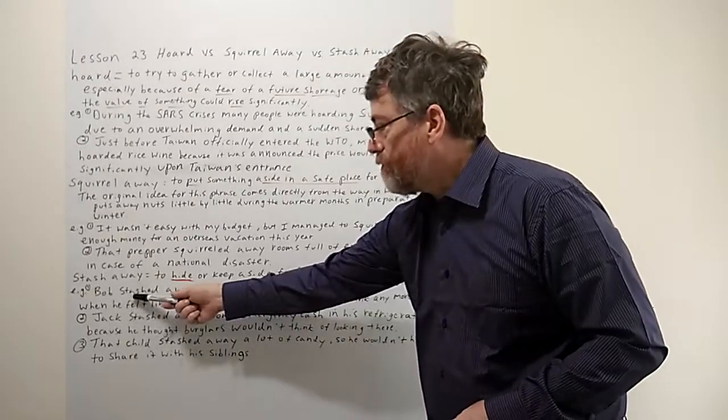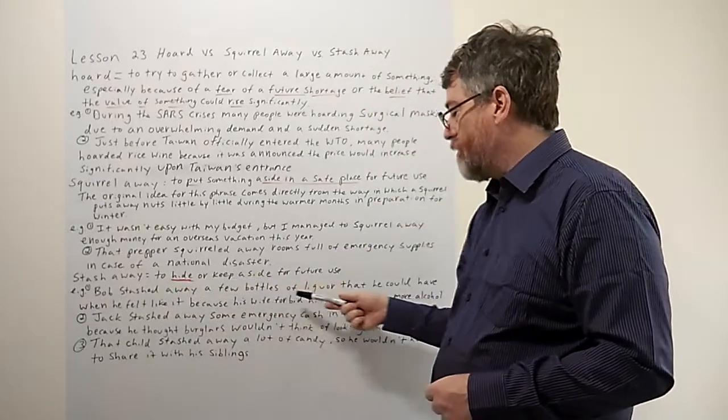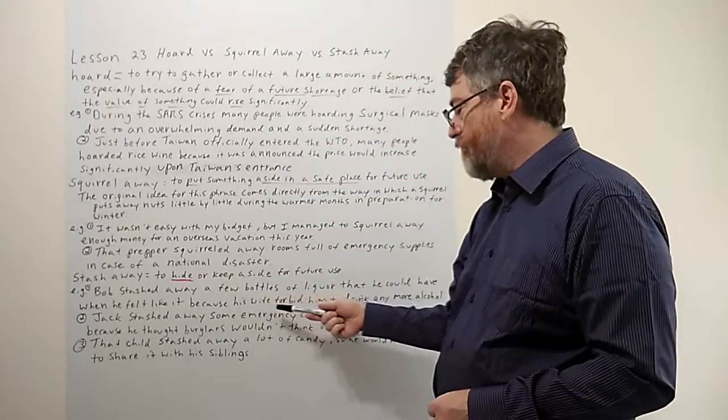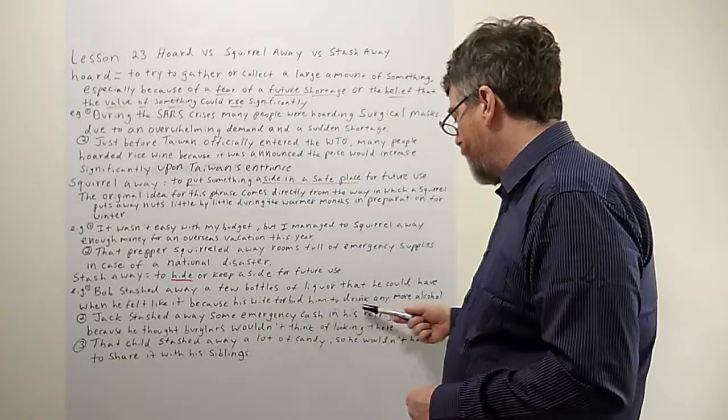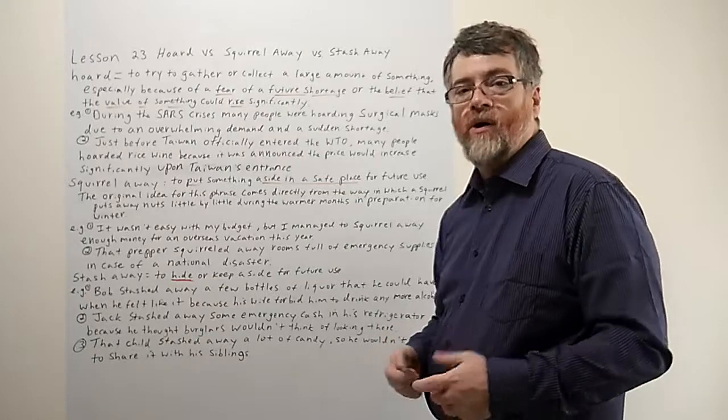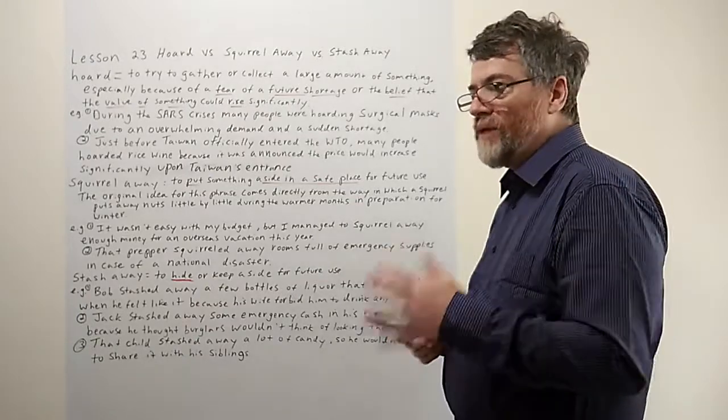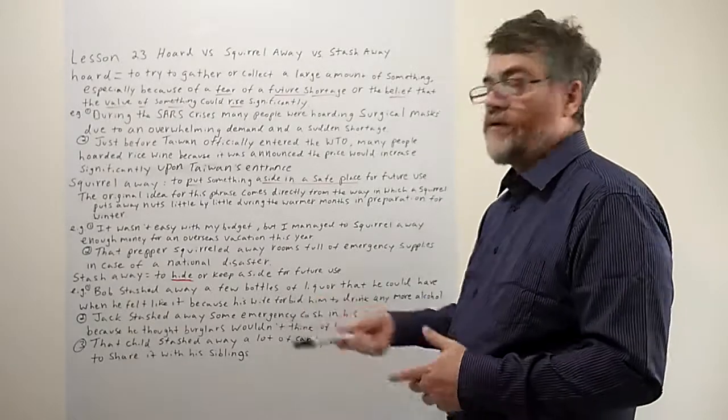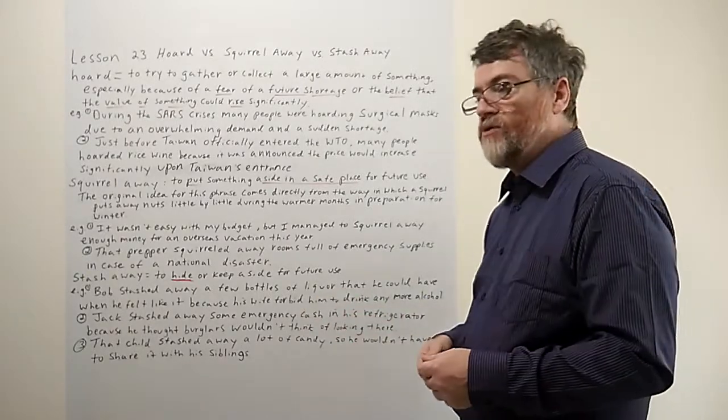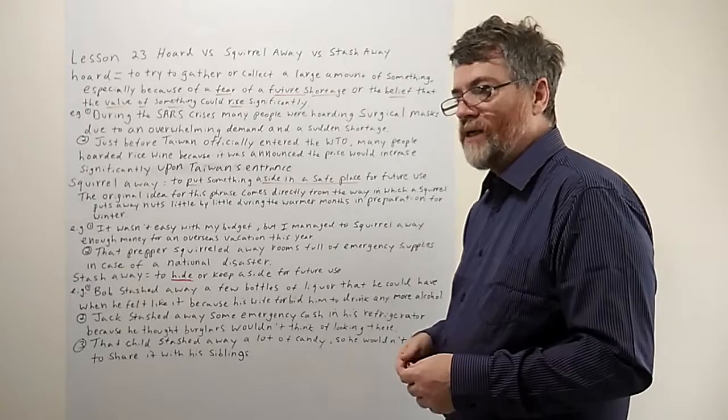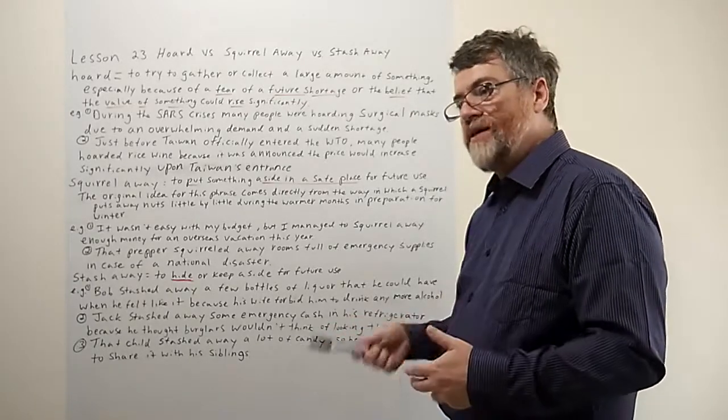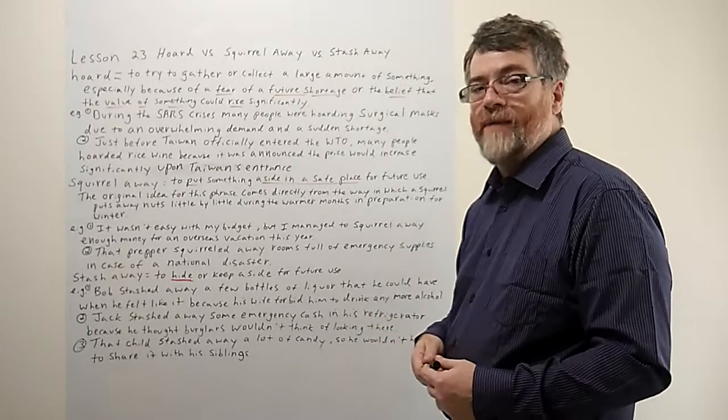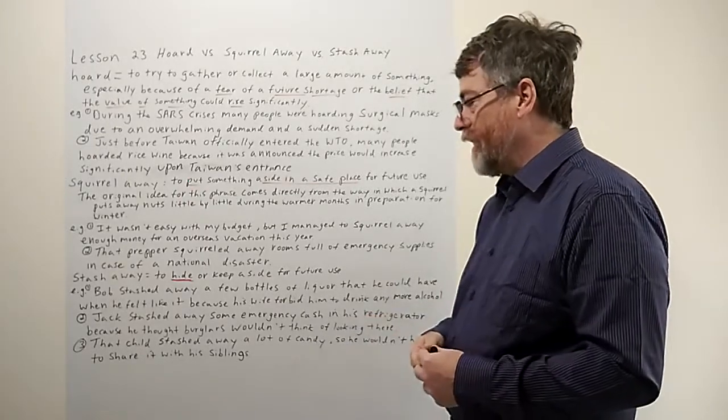So here's the example. First example: Bob stashed away a few bottles of liquor that he could have when he felt like it because his wife forbid him to drink any more alcohol. Yeah, so he's probably even hiding this in his house so his wife or his kids don't find it. You can probably use cigarettes in the same sort of example for somebody who's trying to quit smoking but yet, maybe the urge they can't control it, or maybe they don't really want to stop. Maybe they're just being pressured to, so you might stash it away.